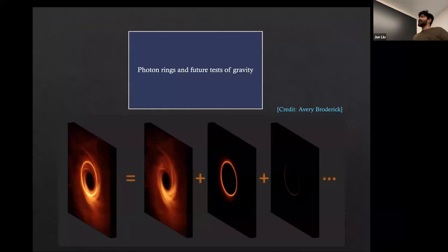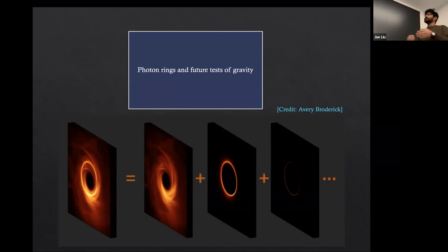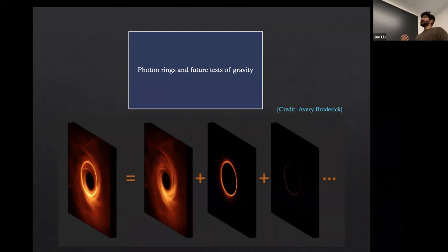So we saw what we can do with the shadow radius — we can set constraints. But like I mentioned, there are inherent degeneracies. With multi-parameter black hole models, different black holes can have exactly the same shadow size. To break this degeneracy, we'd like to look at other observables. One that's come up in the last few years is the Lyapunov exponent. Much of this work was done here at BHI.